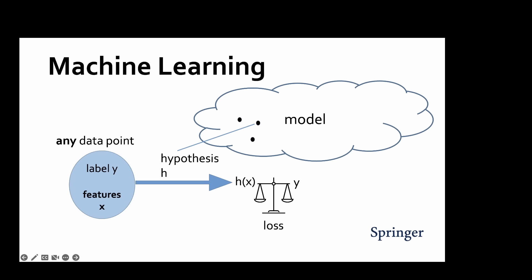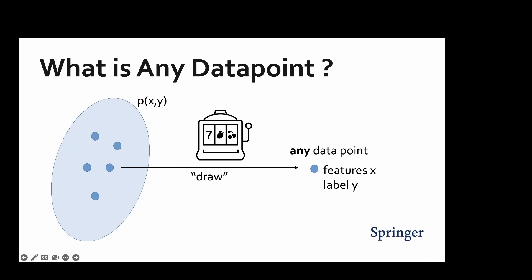However, what do we mean by any data point? The notion of any data point can be made precise using probability theory. In particular, we interpret data points as the result or output of a random generator. We can think of a data point as a result of a separate execution of a random generator or a draw.